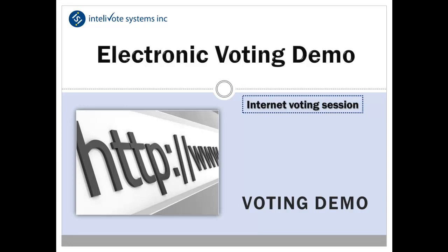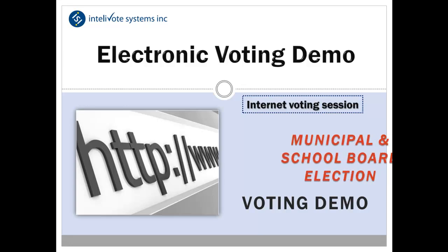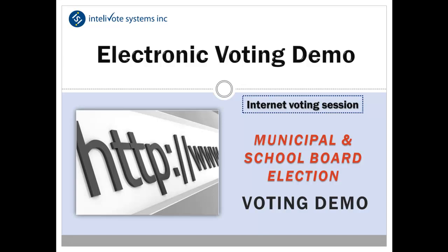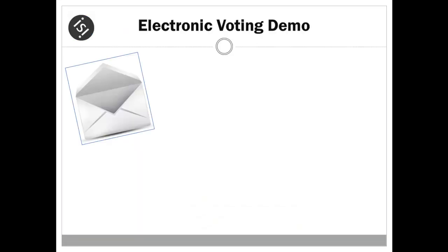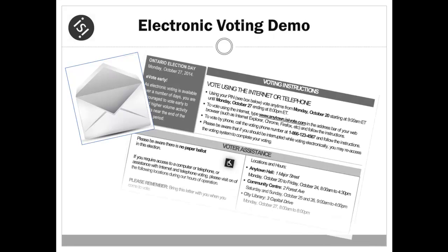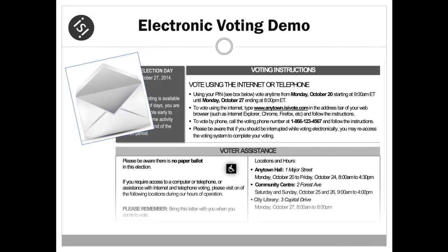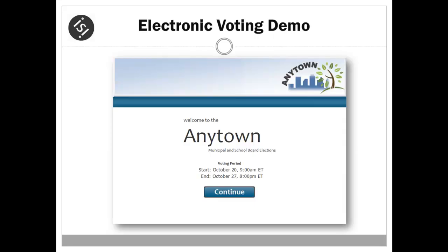The following is an automated demonstration of Intellivote's eVoting system that provides an example of an online eVoting session. To begin, the elector will refer to their voter instruction letter received in the mail for the Intellivote eVoting website address to access the online vote.